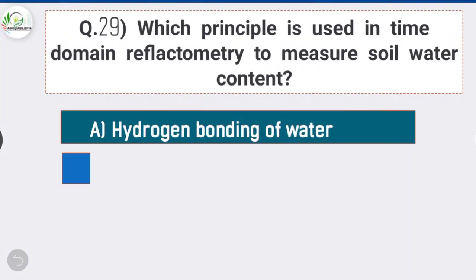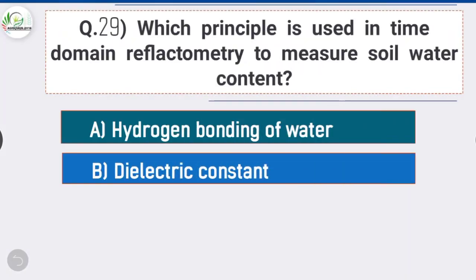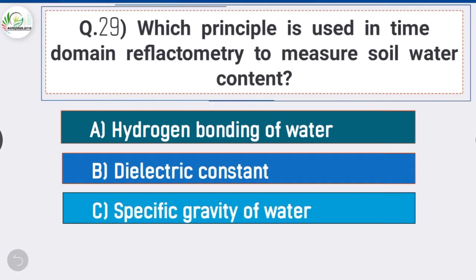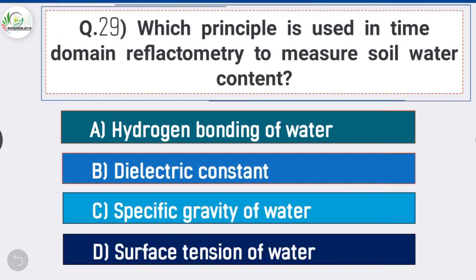Question number 29: Which principle is used in time domain reflectometry to measure soil water content? Answer is option B, dielectric constant.